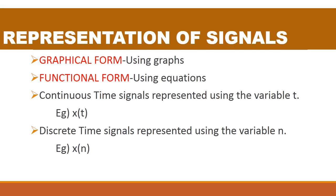Next, we are going to see the representation of signals — that is how to represent a signal. There are two ways: one is graphical form and another one is functional form. Graphical form means using graphs or diagrams you will be representing it. Functional form means using equations we will be representing the signal.